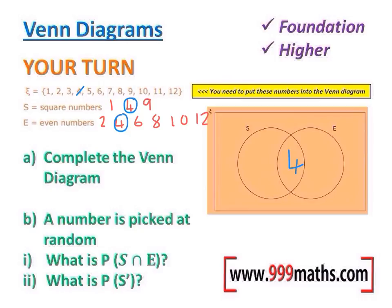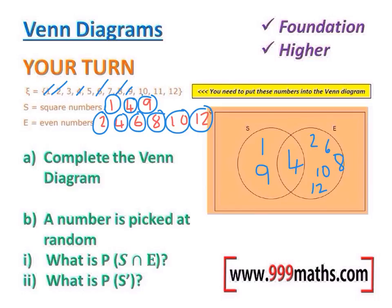So the other square numbers I can write on the left. Notice how I'm just taking my time to cross them off individually to make sure I've not missed any. And the other even numbers can go on the right. That leaves me with just the non-square, non-even numbers: 3, 5, 7, and 11.